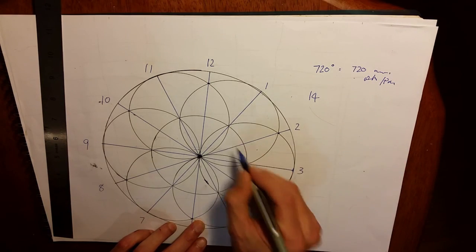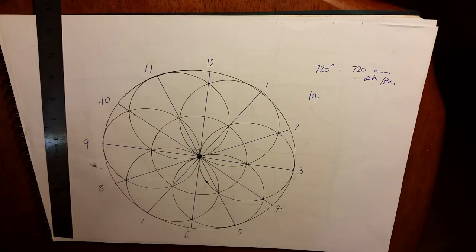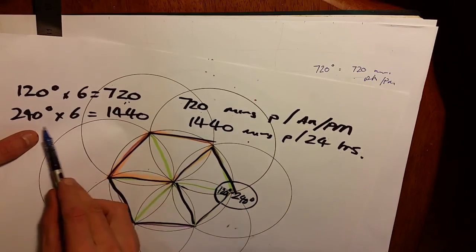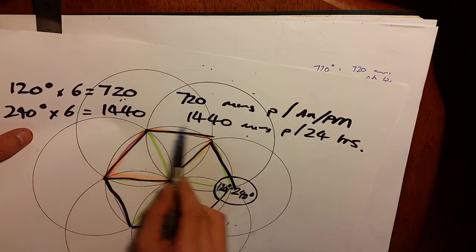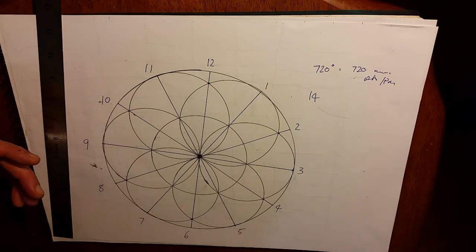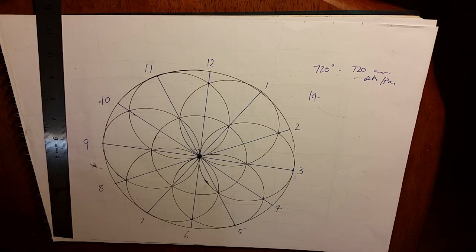Or the exterior of the hexagon is 240 degrees. 240 times 6, 1440. 1440 minutes per day. So again we see how the minutes and degrees, minutes and seconds in the compass work back towards hours, minutes and seconds in the clock.